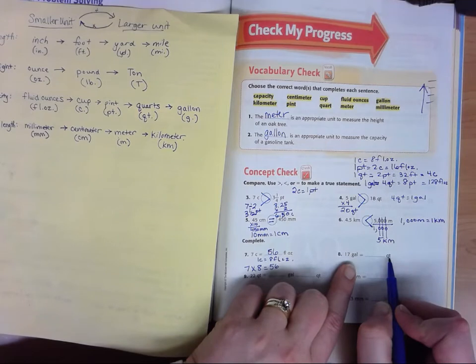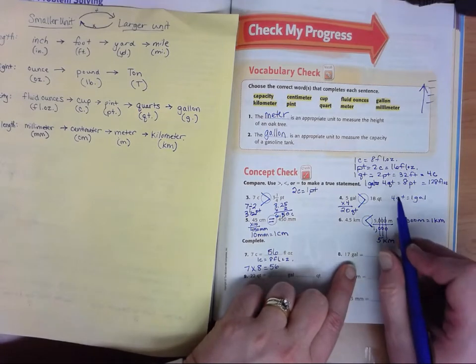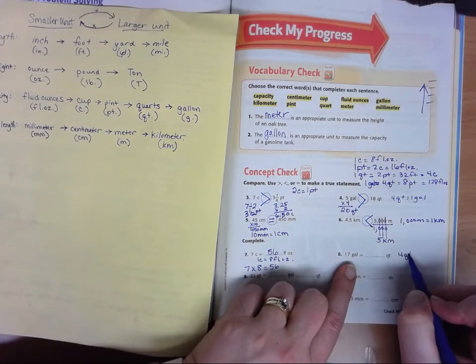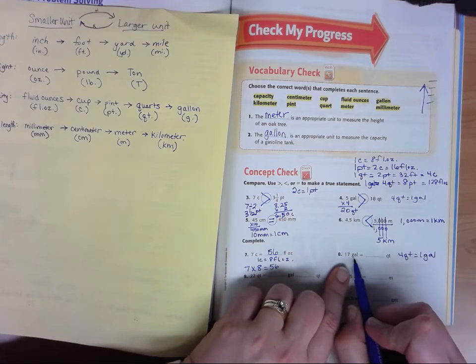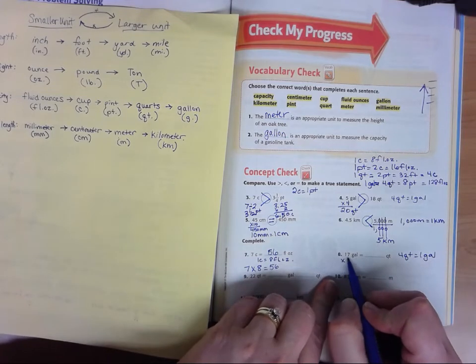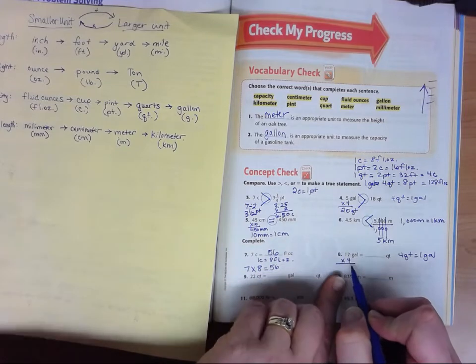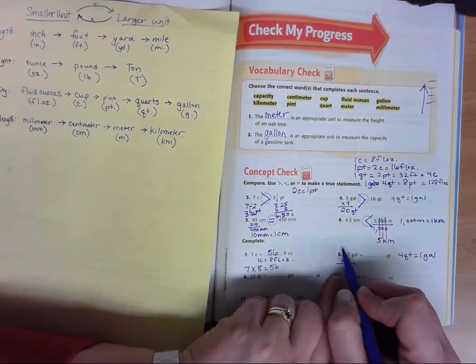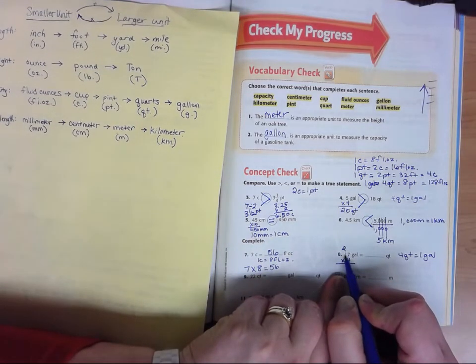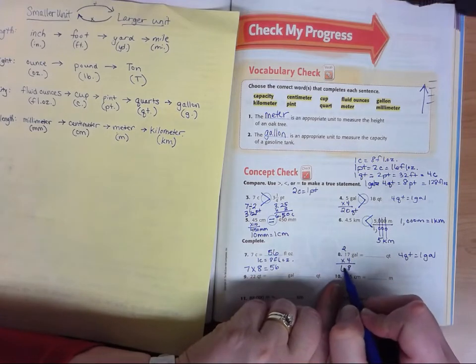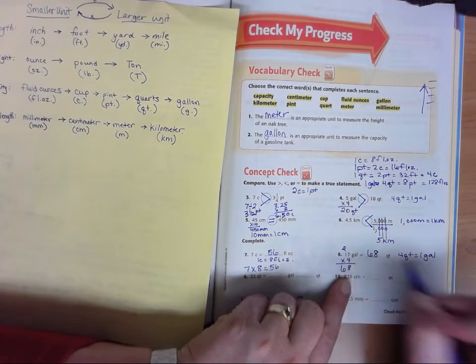Gallons, we're going to change to quarts again. We said there's four quarts in a gallon. So 17 times four would give us those quarts. Well, seven times four is 28. Four times one is four plus two is six. So 17 gallons is 68 quarts.